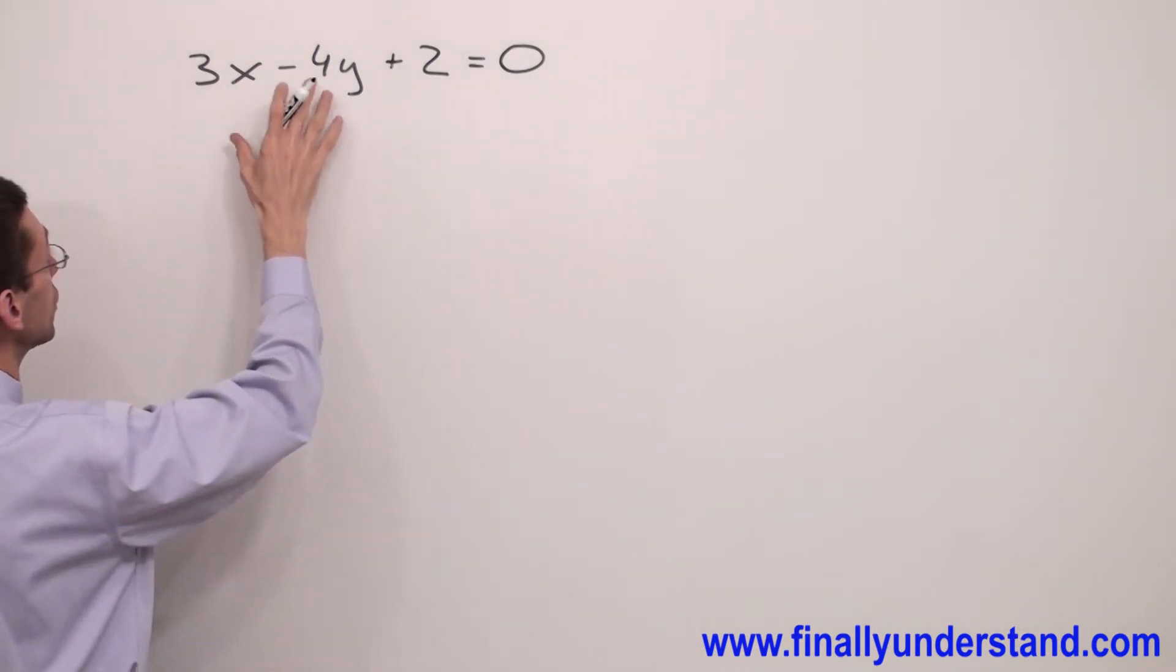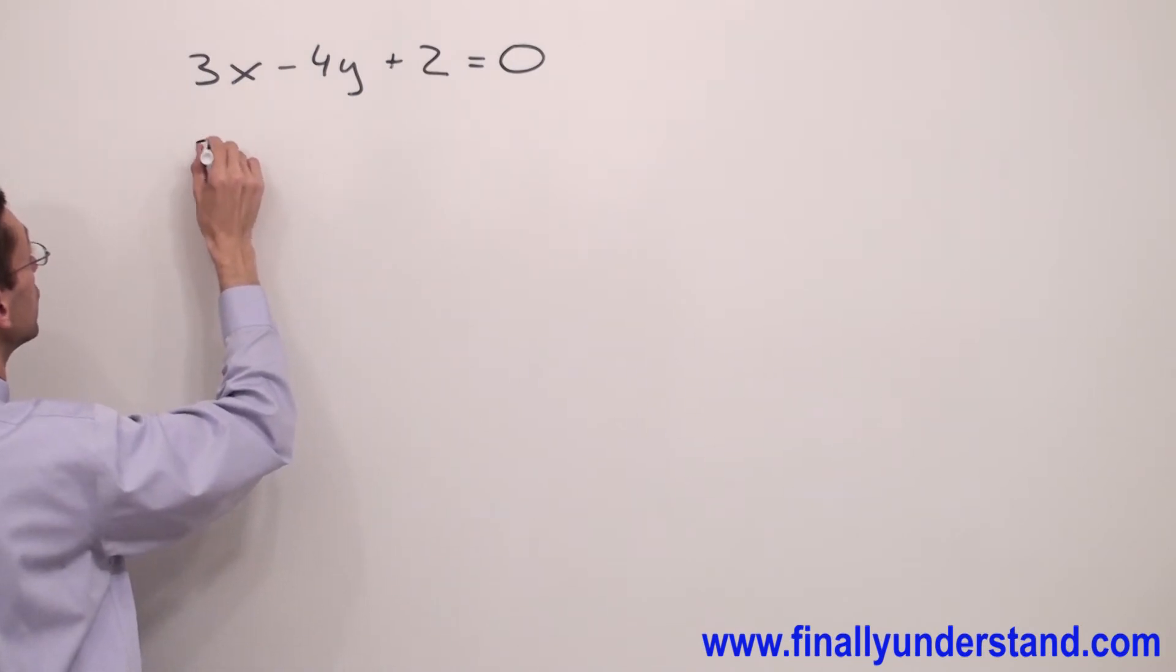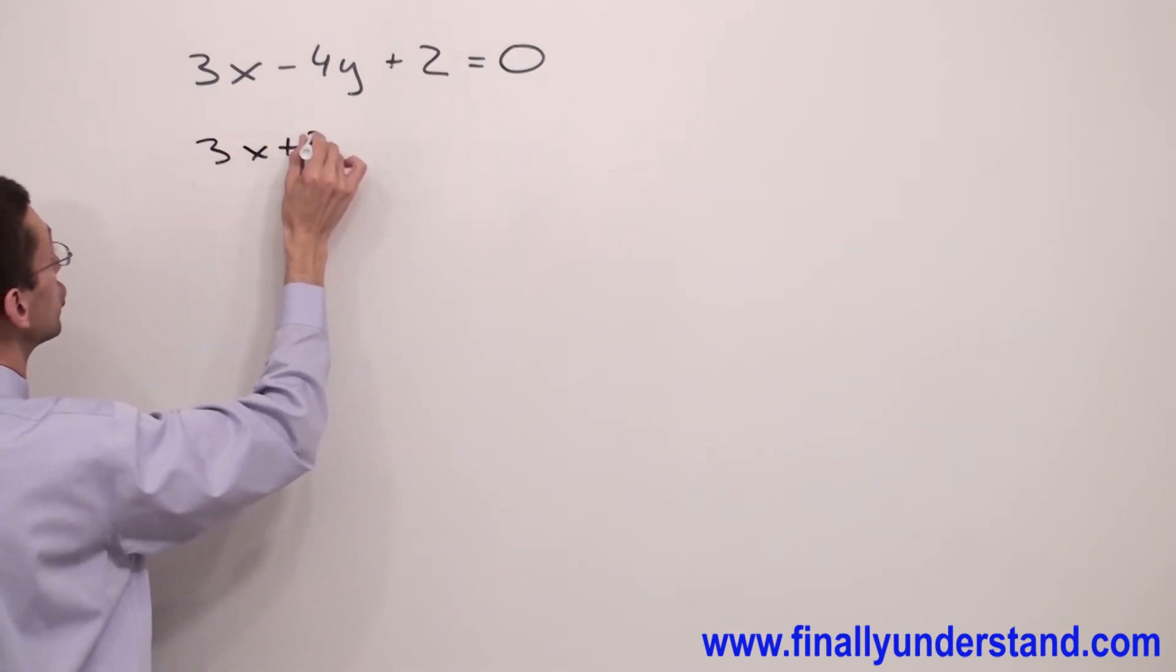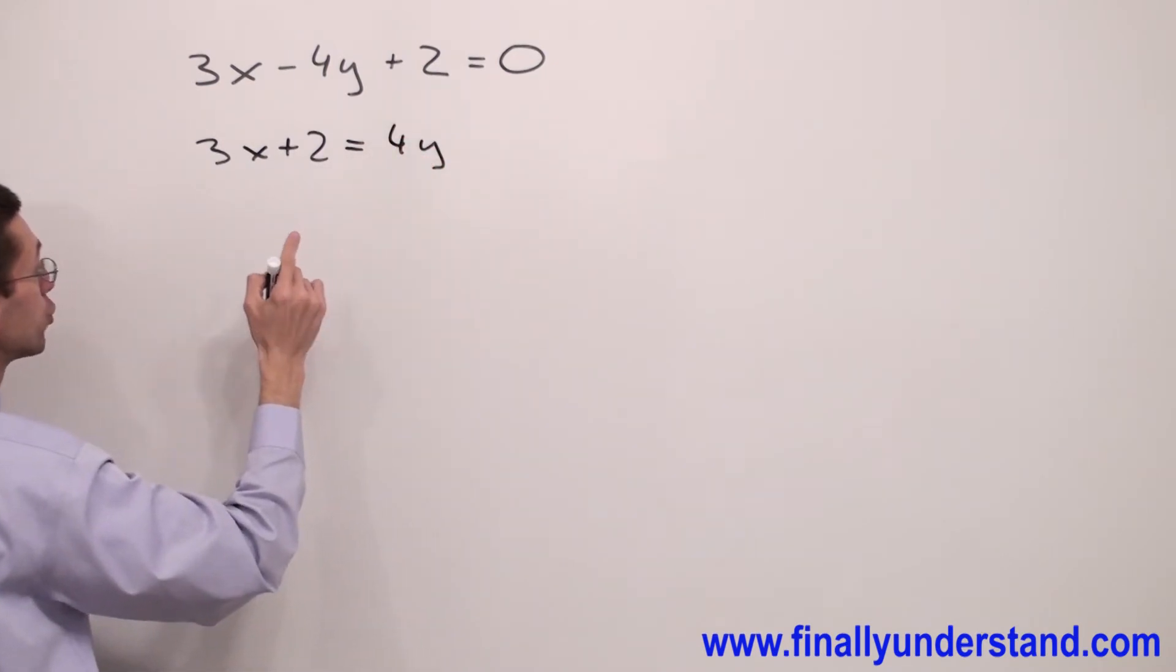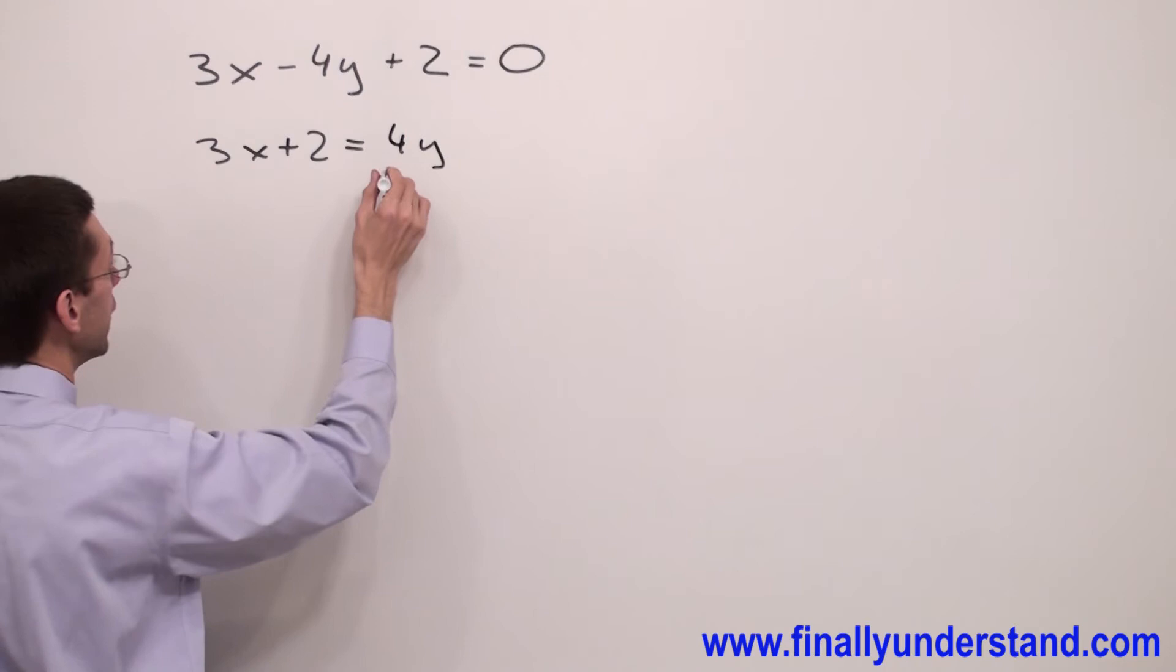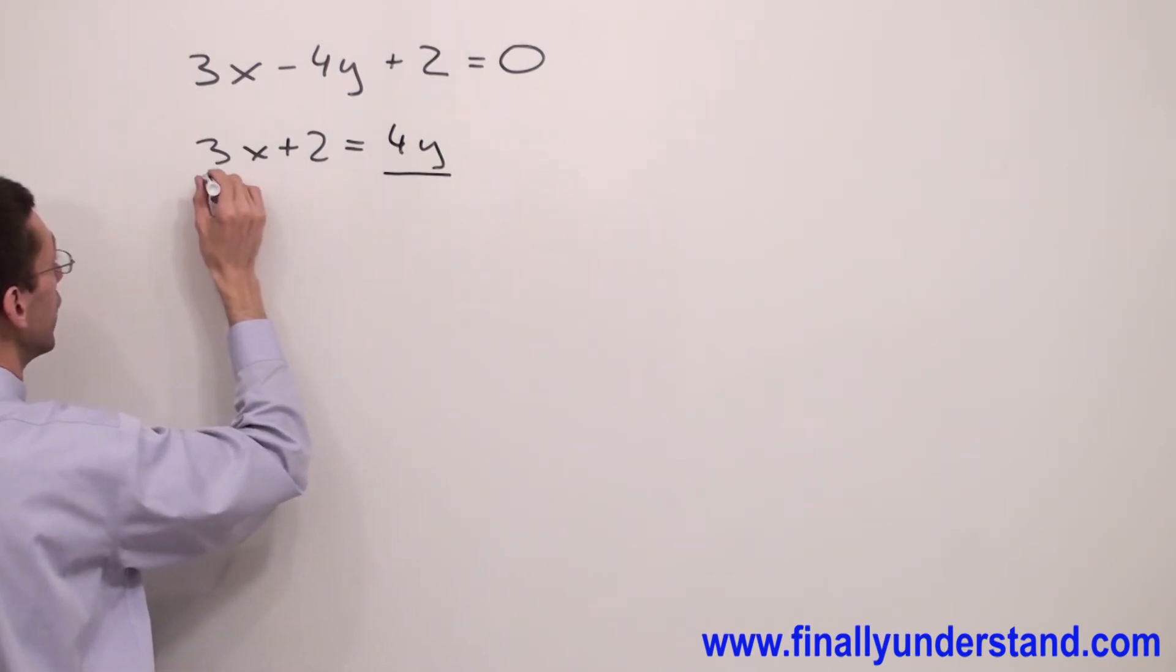In order to convert this negative value to positive, I'm going to have 3x plus 2 equals 4y. I have to solve this equation for y by dividing both sides of the equation by 4.